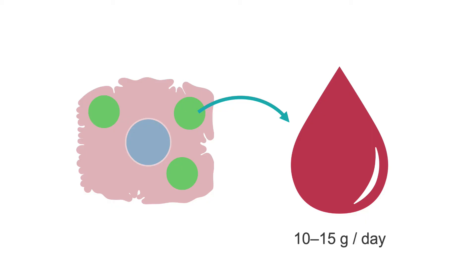Albumin is synthesized by liver hepatocytes, but very little albumin is stored in the liver. It is rapidly excreted into the bloodstream at the rate of 10 to 15 grams per day in people with normally functioning livers.